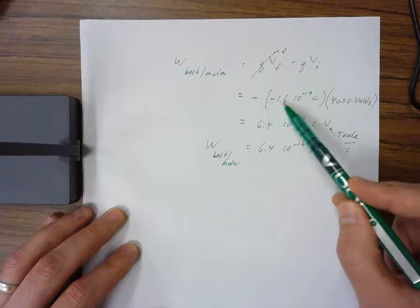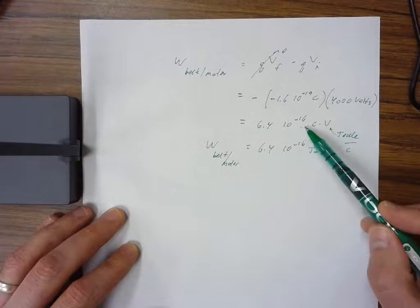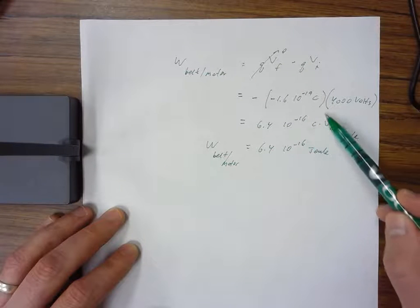Those two negative signs cancel out, giving me a total work of 6.4 times 10 to the negative 16 coulombs times volts.